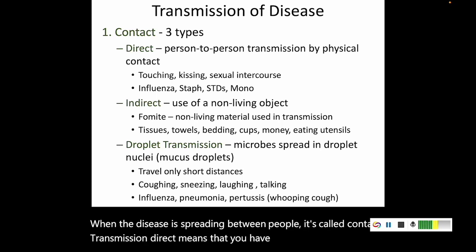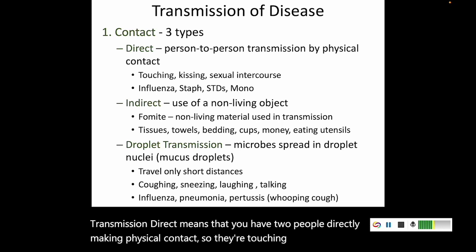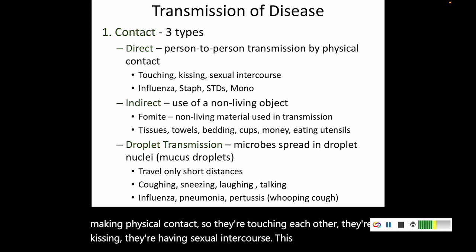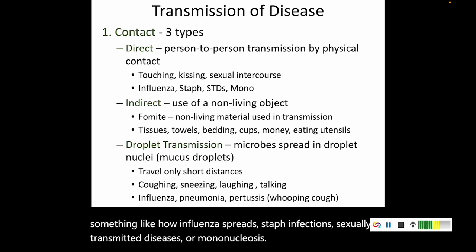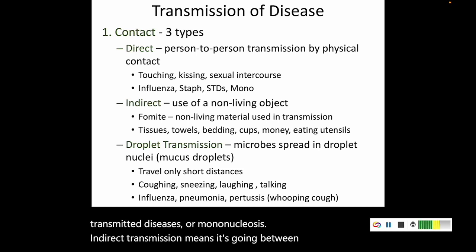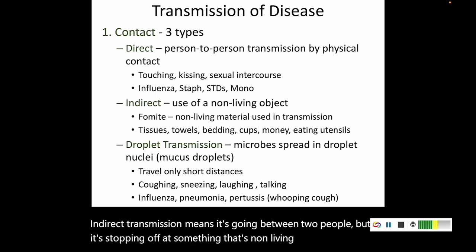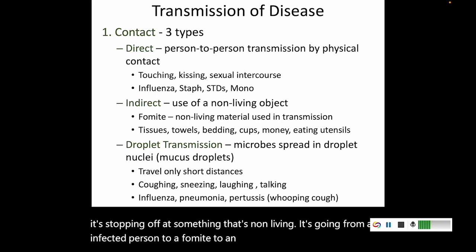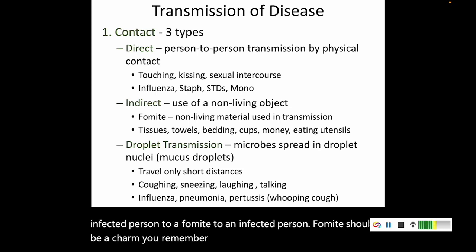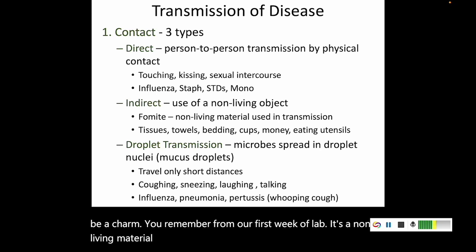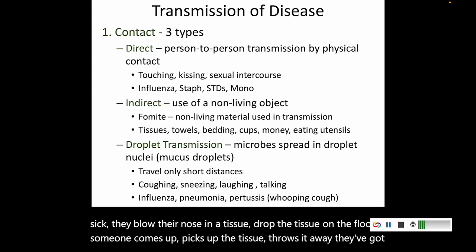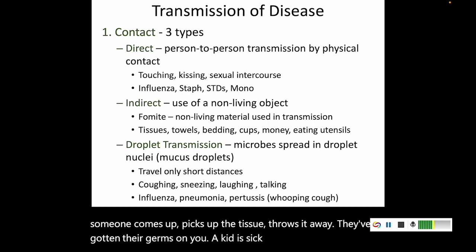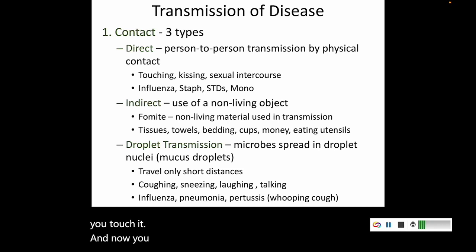Direct contact transmission includes diseases like influenza, staph infections, sexually transmitted diseases, and mononucleosis. Indirect transmission means it's going between two people but stopping off at something non-living — going from an infected person to a fomite to another person. A fomite is a non-living material used to transmit a disease. For example, someone sick blows their nose in a tissue, drops it on the floor, someone else picks it up — they've gotten germs on them. A kid licks an elevator button, you touch it — that's indirect transmission.